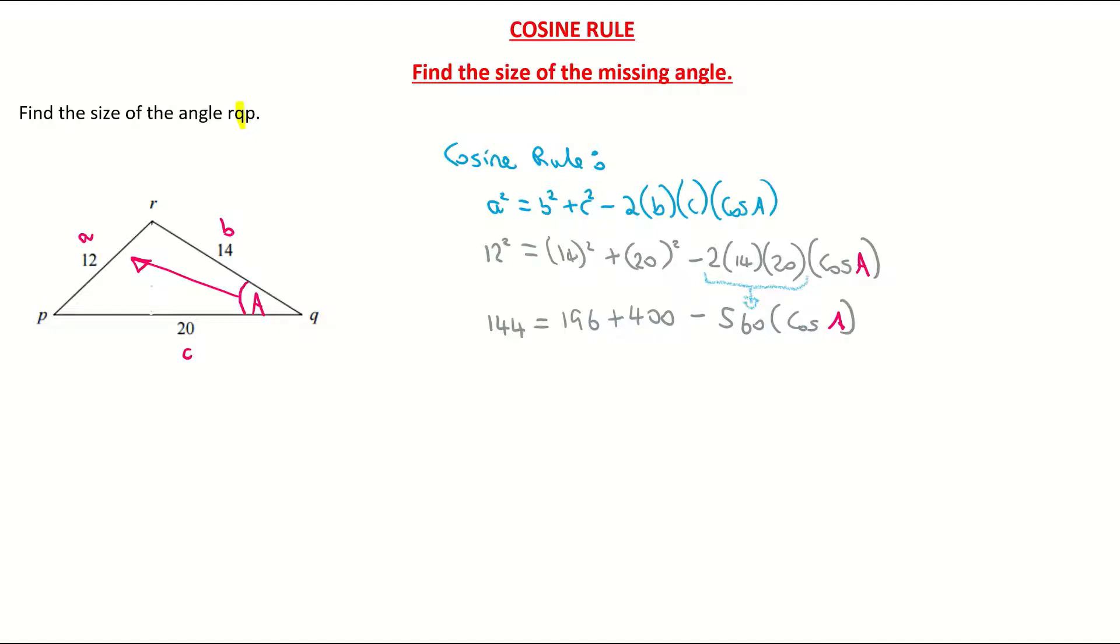A little bit of tidying up now. So I have 144 is equal to, I'm now just going to add 196 and 400 together, so I get 596 minus 560 times my cos of my angle.